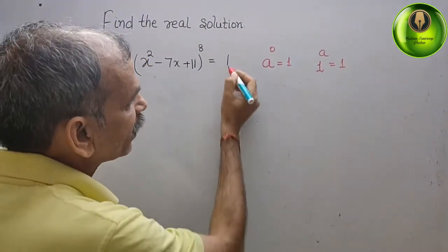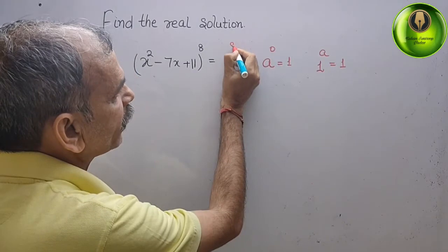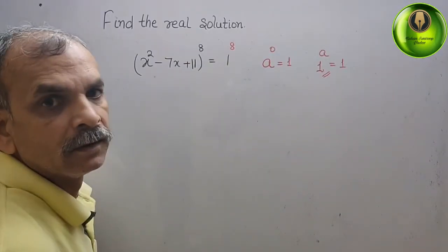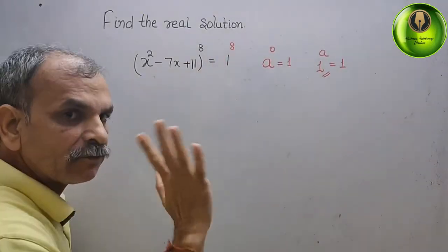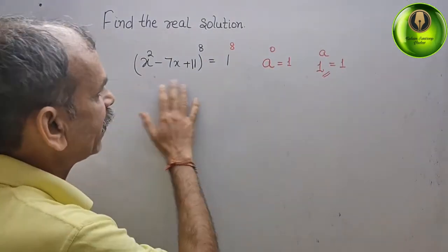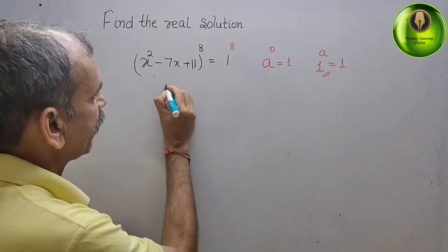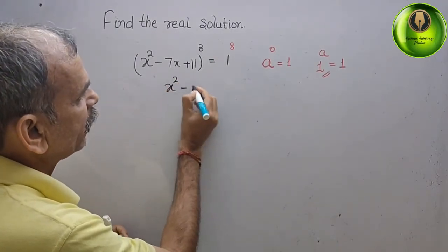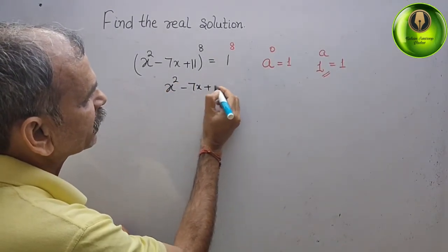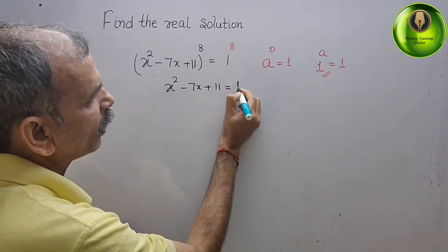So here we can write 1 to the power of it, this 1. So now the powers are equal, that means that the base is equal to 1. That is, x square minus 7x plus 11, that is equal to 1 now.